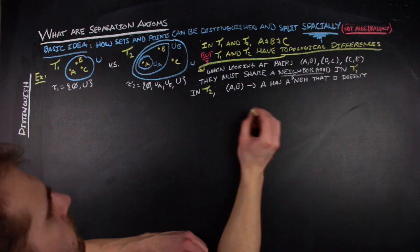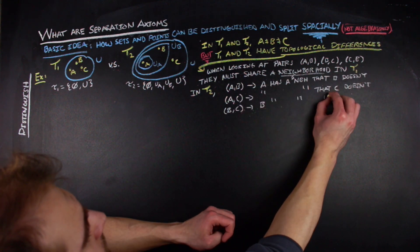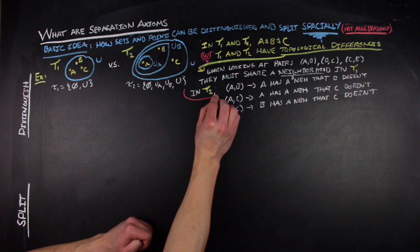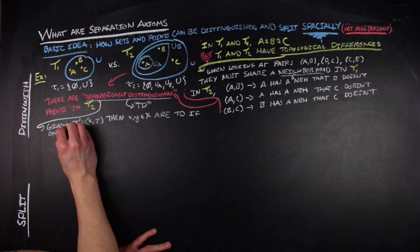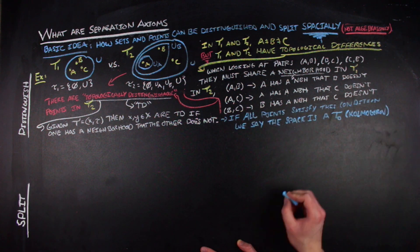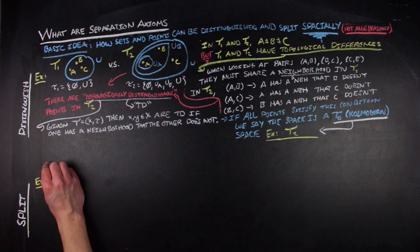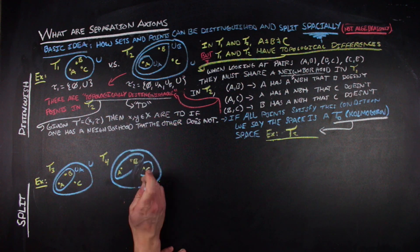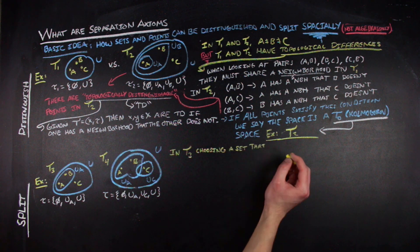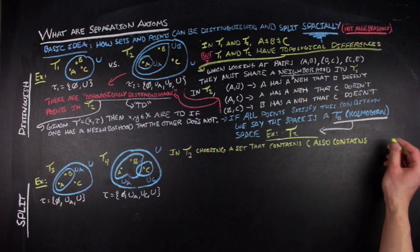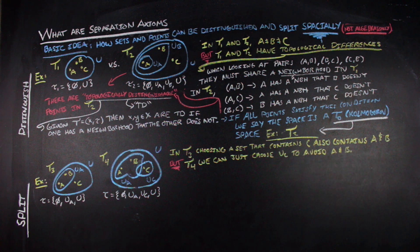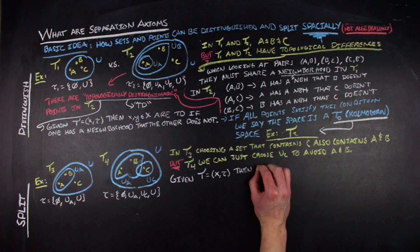So when you take a and b, a has a neighborhood that's not a neighborhood of b. When you take b and c, b has a neighborhood that's not a neighborhood of c. And when you take a and c, a has a neighborhood that's not a neighborhood of c. When pairs of points operate in this way, we say they are topologically distinguished points. When all points in the space satisfy this condition, we say that the space is a Kolmogorov space, or a T0 space.